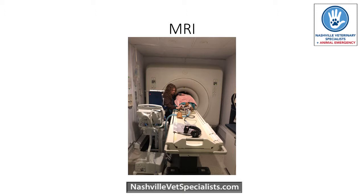Other differentials like strokes usually show up on MRI but not CT, so MRI is a much better choice when evaluating the brain. The downsides are cost and time — a CT might take 10 minutes while an MRI takes closer to an hour, so patients are under anesthesia longer. But we definitely get more information from it.